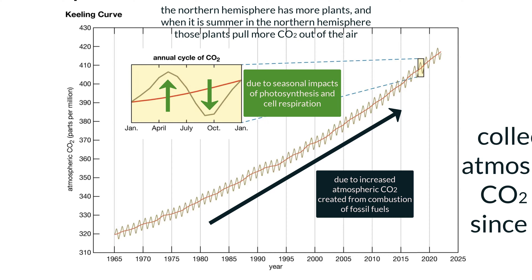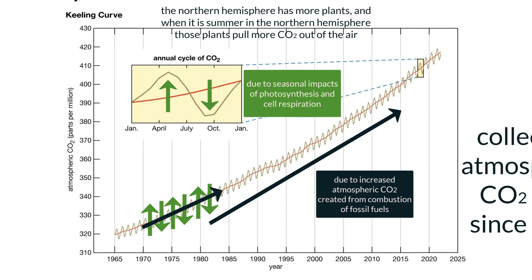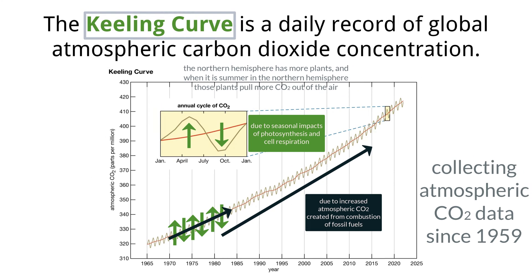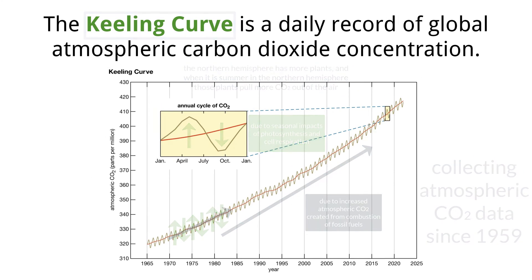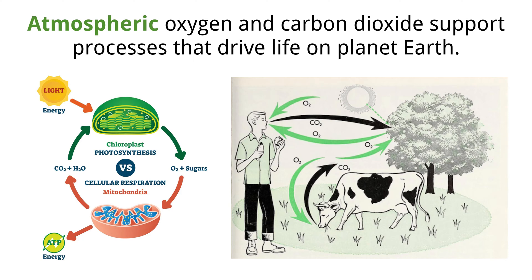To sum this up: the yearly fluctuations in the Keeling Curve are due to natural seasons, and the overall increase year after year is due to human activity, including the combustion of fossil fuels and deforestation. We have talked about how carbon cycles in ecosystems, but carbon is of course not the only component that cycles — oxygen, nitrogen, and many other elements have their own unique cycles that move around in different pools and sinks.